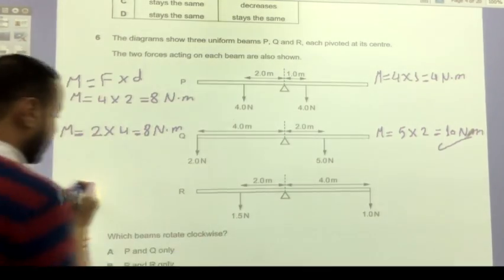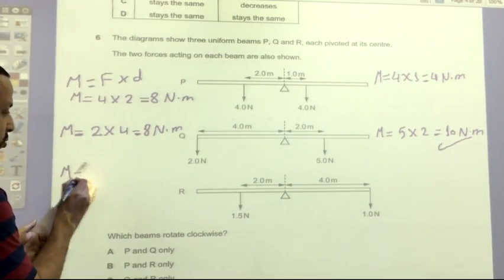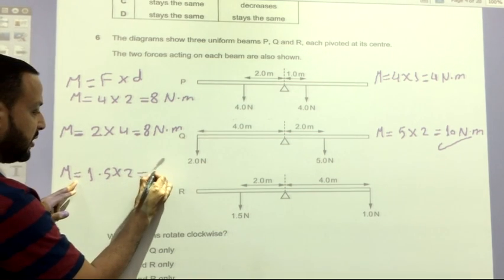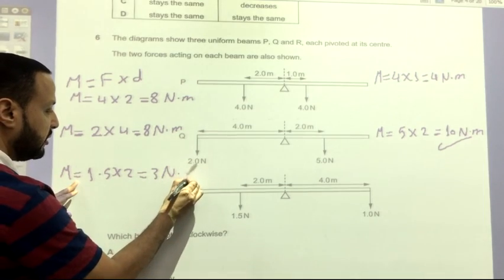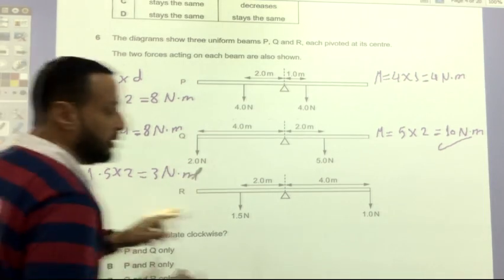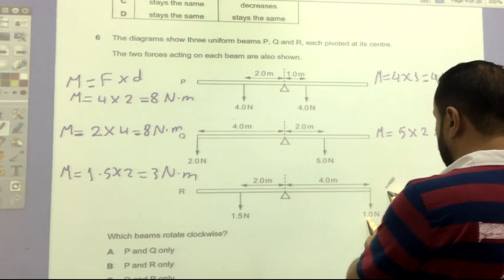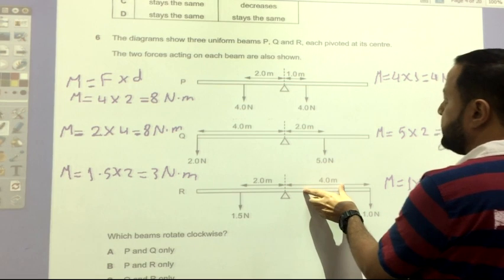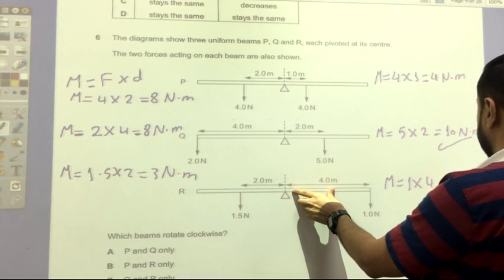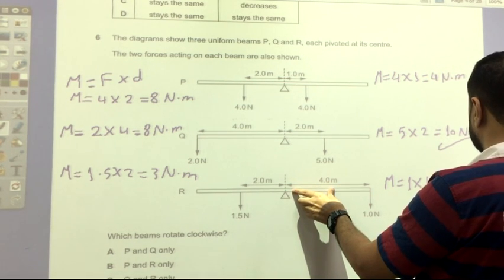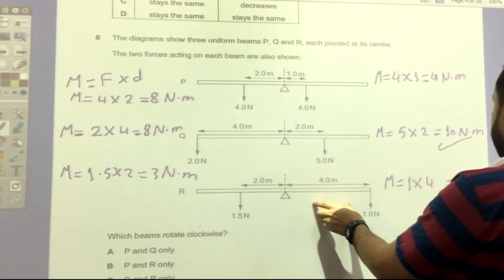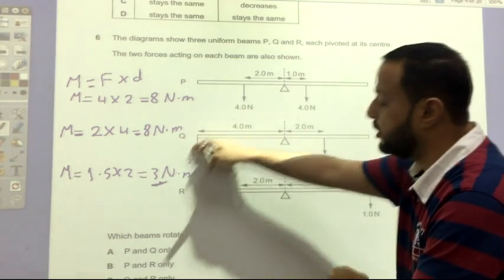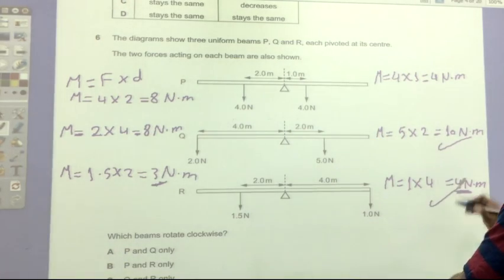The last one, M equals force 1.5 times 2 equals 3 Newton dot meter. Here moment of force equals 1 times 4, which is the distance between the force and the pivot, equals 4 Newton dot meter. Here we have 4 and here we have 3, so it will rotate clockwise moment. So also this is the right answer.